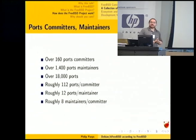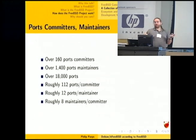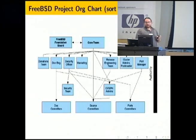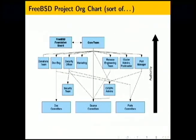We have many ports committers, but even more maintainers. We have 160 ports committers, and maintainers just maintain the ports — it's a line in a makefile, and a couple of committers pick up on them and commit them. An org chart is difficult to draw for this strange spidery organization. We've got the core team and the foundation at the top, the security officer blesses the security team, release engineering deals with admins, and at the baseline we've got the people doing the actual work — the source, ports, and doc committers. It looks roughly like what Debian looks like too, just with different labels.